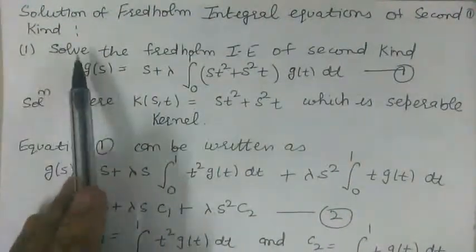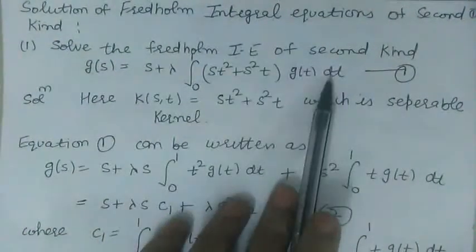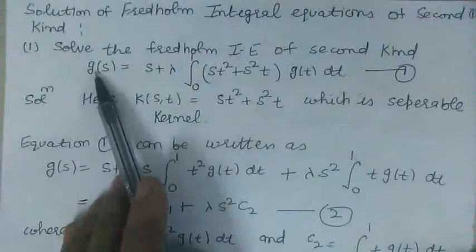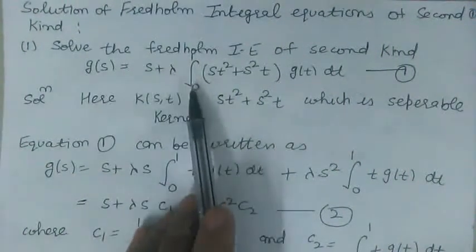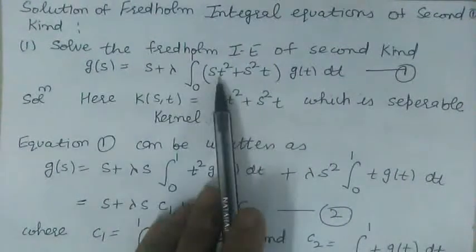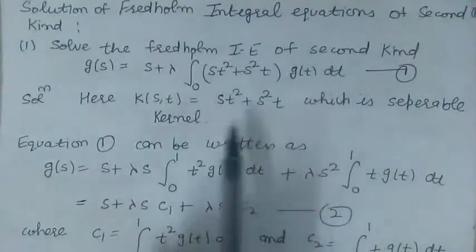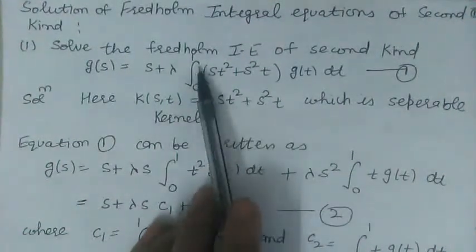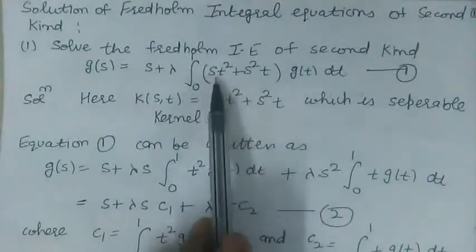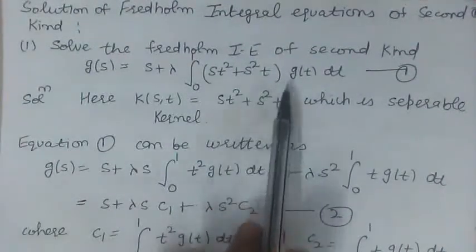The first example is: solve the Fredholm integral equation of second kind given by g(s) = s + λ ∫₀¹ (st² + s²t) g(t) dt. This is a Fredholm integral equation of second kind. The lower and upper limits are both fixed, and the kernel (st² + s²t) is a separable kernel.